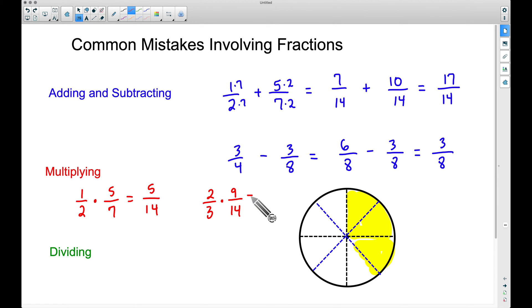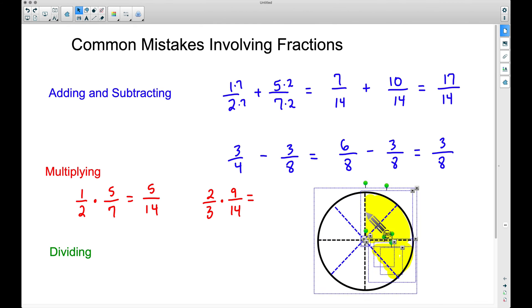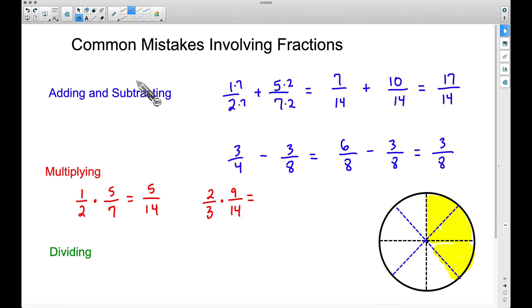Now let's look at this one because sometimes we can simplify later on in the problem or we can simplify from the very beginning. But again, multiplying fractions, top times top, 2 times 9, we get 18. Bottom times bottom, 3 times 14, that will give us 42.